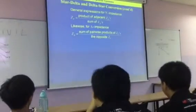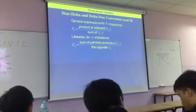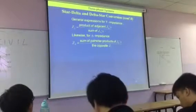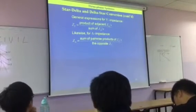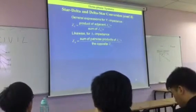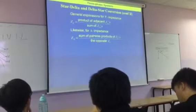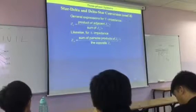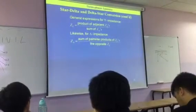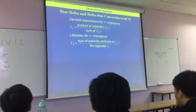We can have the general expressions, mathematicians like general expressions. It's basically saying, for our star impedance, Z equals the product of adjacent delta impedances, divided by the sum of the delta impedances. Likewise, for delta impedance, the impedance is the sum of power-wise products of the stars, divided by the opposite impedances of that star.